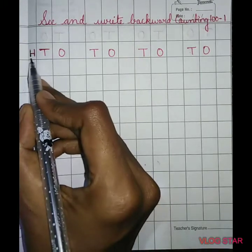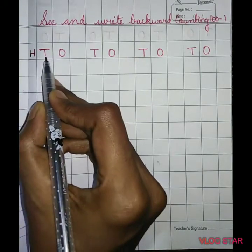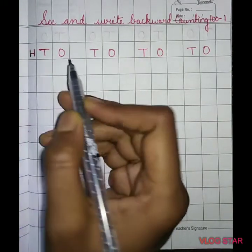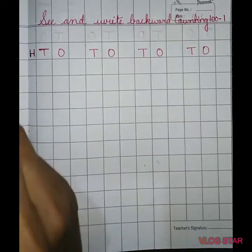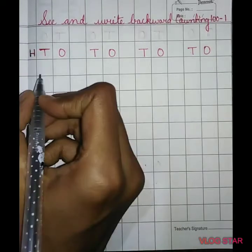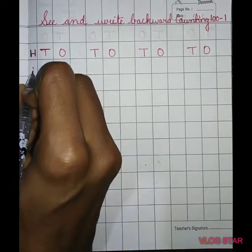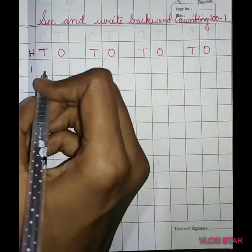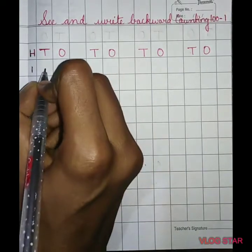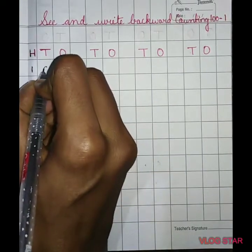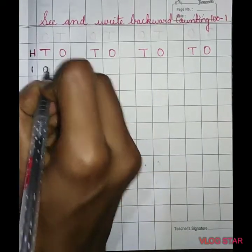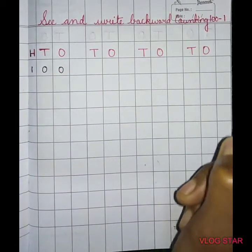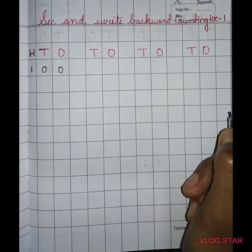This is the 100th place, this is the 10th place, and this is the 1's place. So at the 100th place we will write 1, and in the 10th and 1's place we will write 0, 0. This is 100.